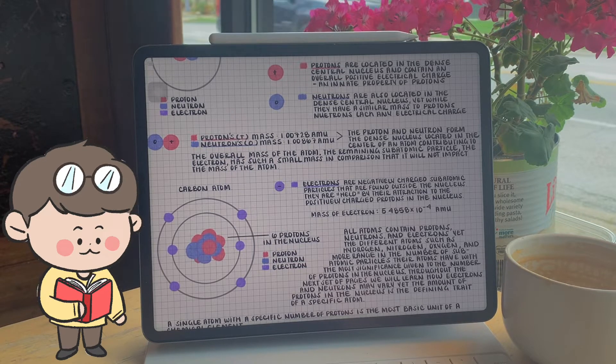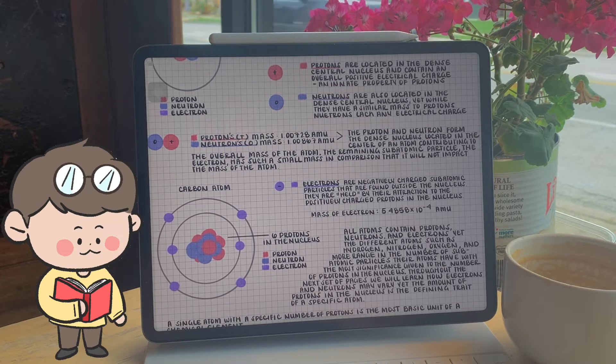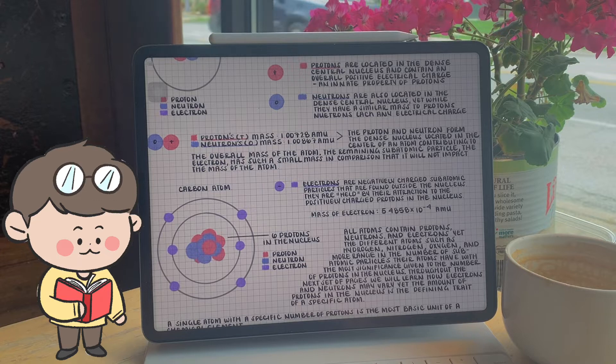The proton and neutron form this nucleus, located in the center of the atom, contributing to the overall mass of the specific atom we're talking about.